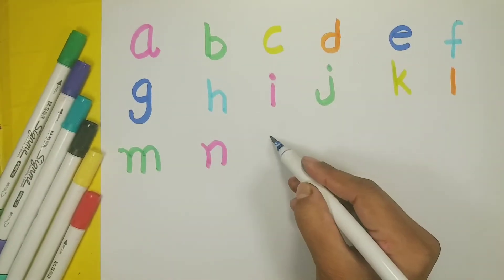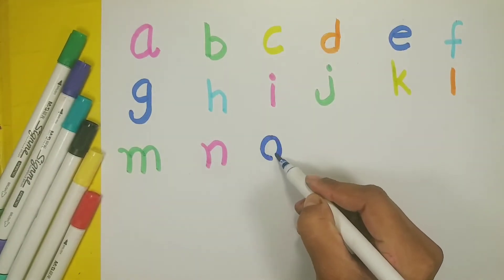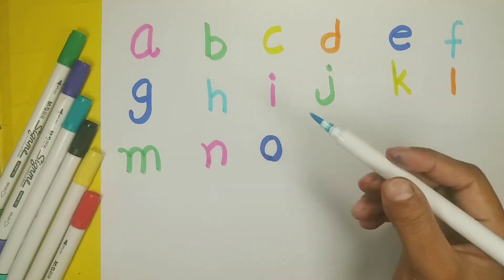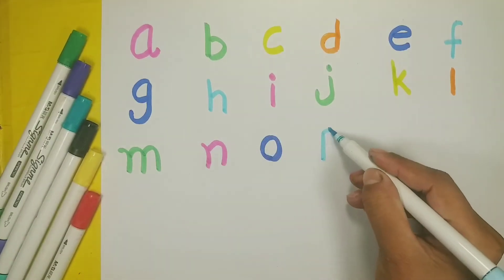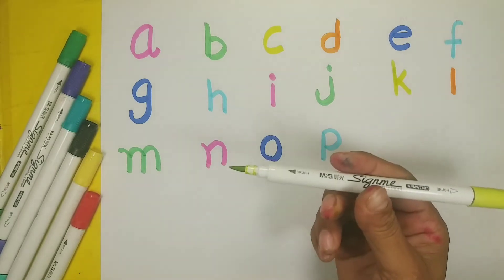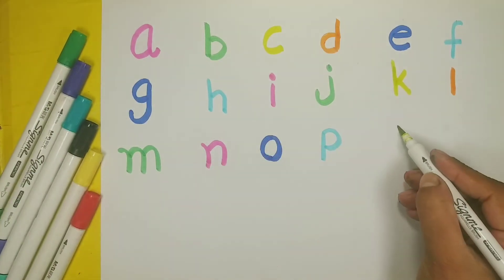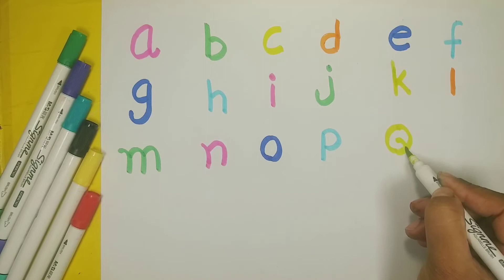Blue color O, O for orange. Sky blue color P, P for pencil. Yellow color Q, Q for queen.